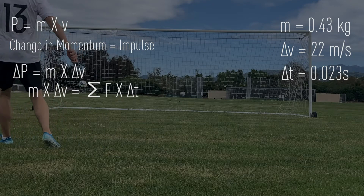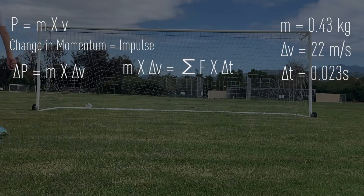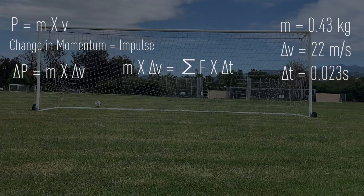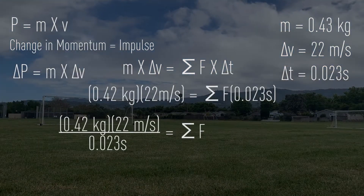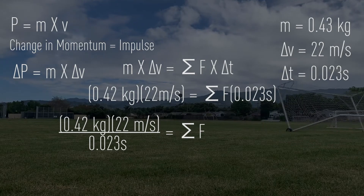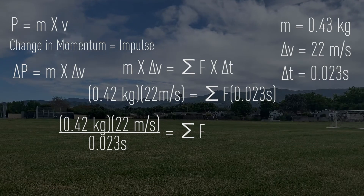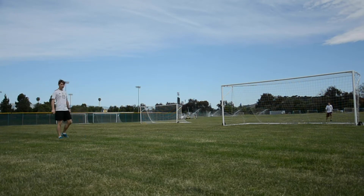Now let's plug that into our equation. We start with net force times the change in time equals mass times change in velocity. Now we just substitute in our values. We divide both sides by 0.023 seconds and find that the minimum net force required for the ball to reach a top speed of at least 22 meters per second is about 411.3 newtons. So if I strike the ball with at least that amount, it should go right into the goal.